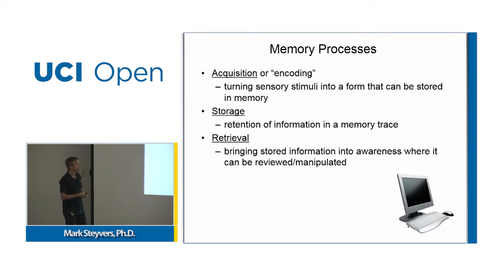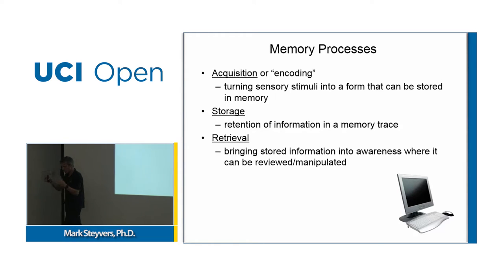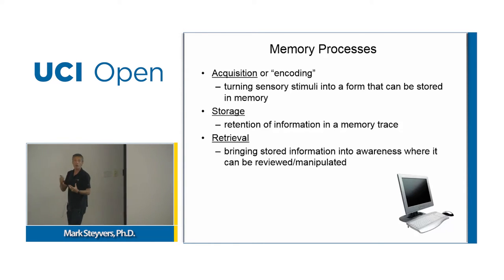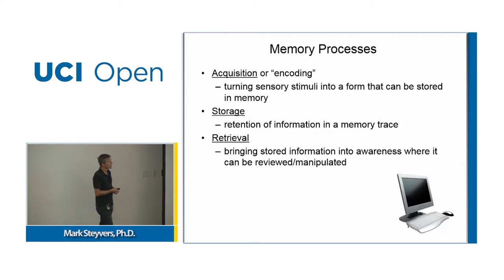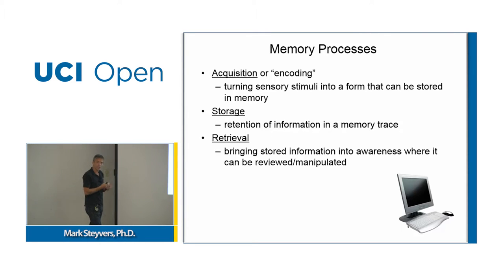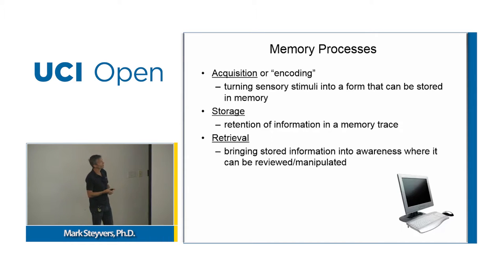Then we have to store the information in memory. This is not a one-shot event where something gets stored in some part of your brain. It's an ongoing process where your brain is constantly working on retaining something in memory. And then there's retrieval — something is stored, but you need to get it back into conscious awareness. That's yet another process.